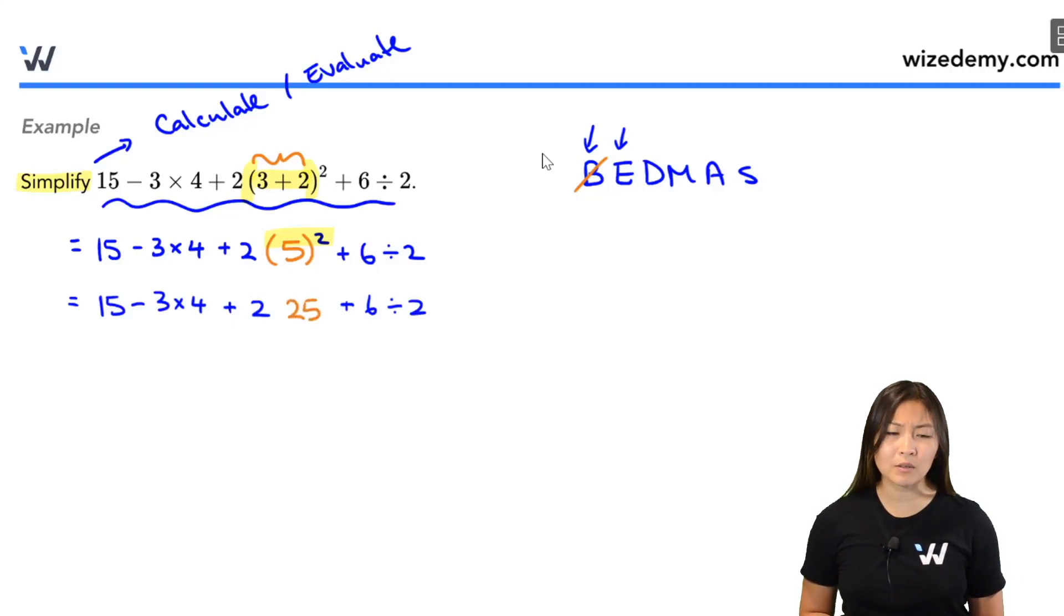Again, this looks confusing. Is this 2 times 25 or is this 225? That's why a lot of times, again, we will just leave it as brackets, and now we've dealt with this exponent.